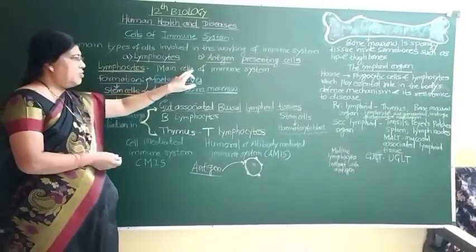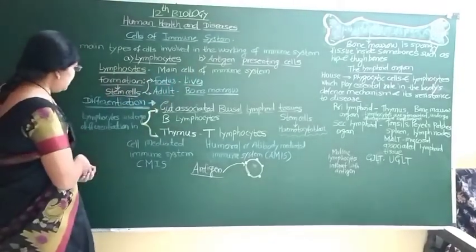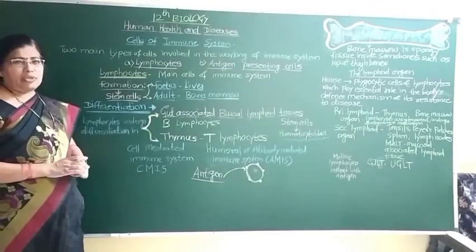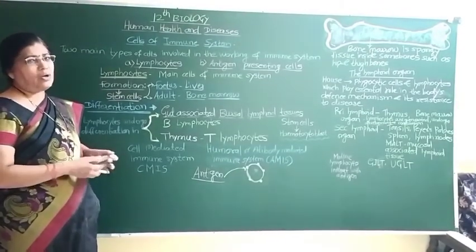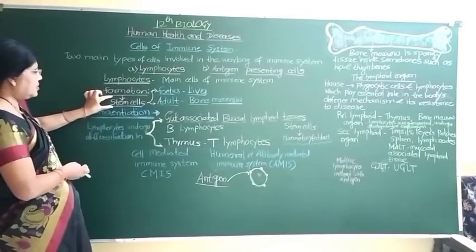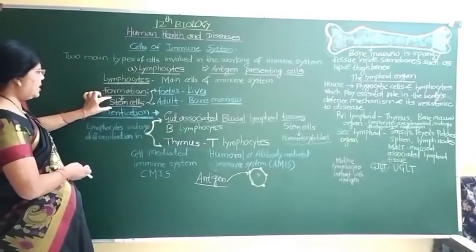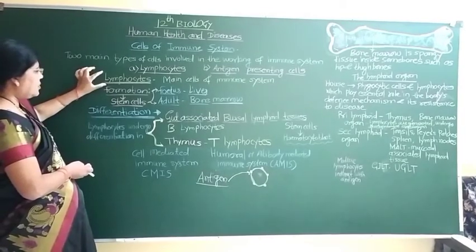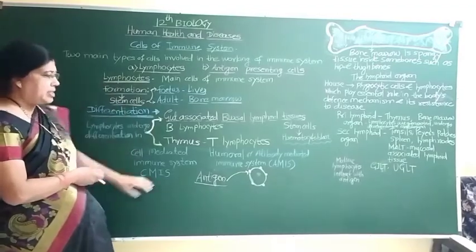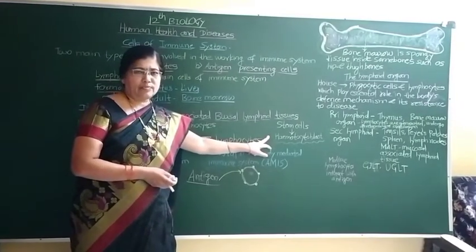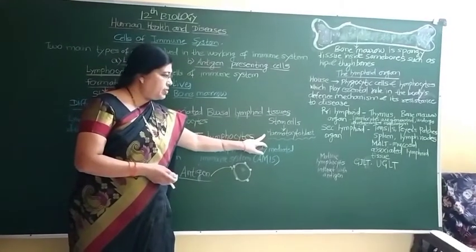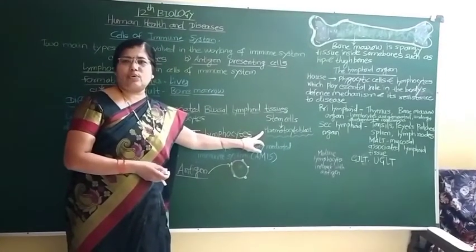Lymphocytes are the main cells of the immune system. The first point is the formation of lymphocytes. Lymphocytes are produced from stem cells called hematocyte blast.